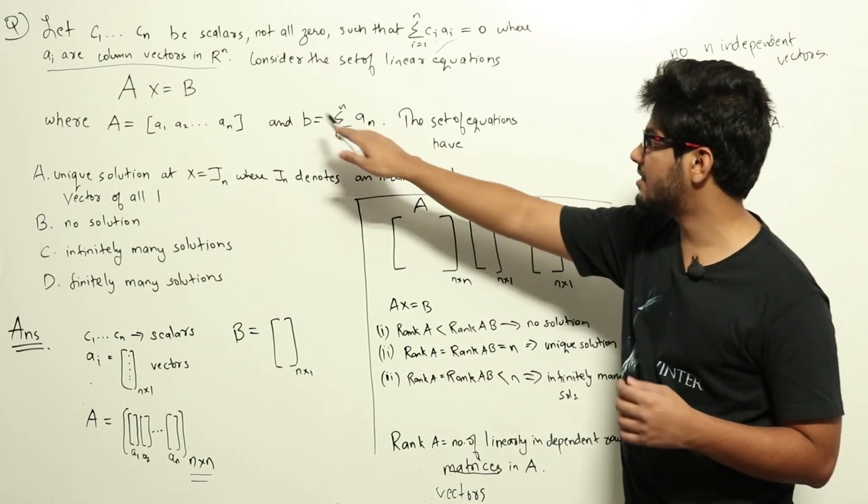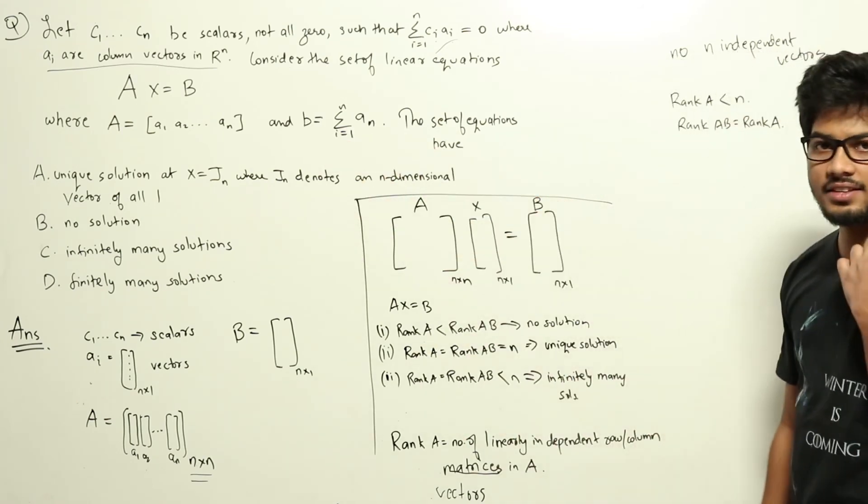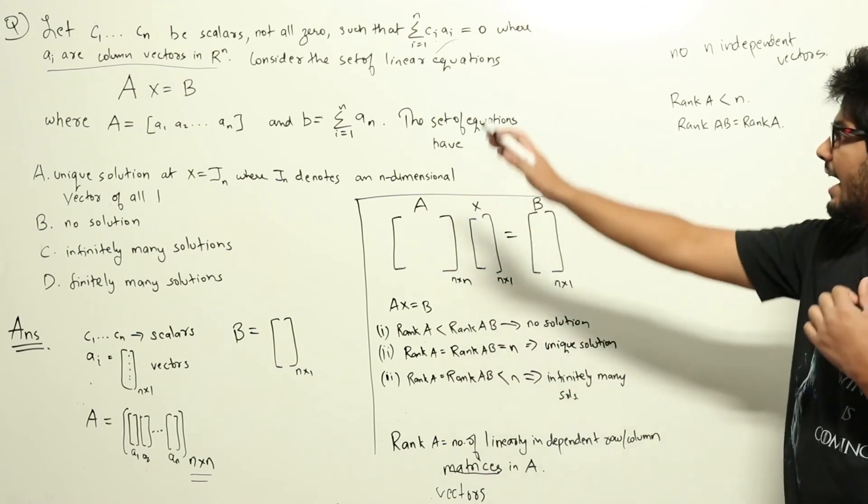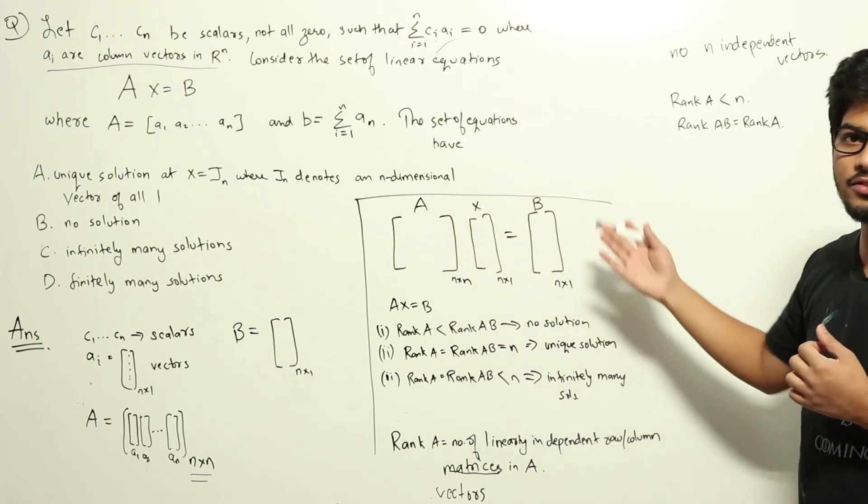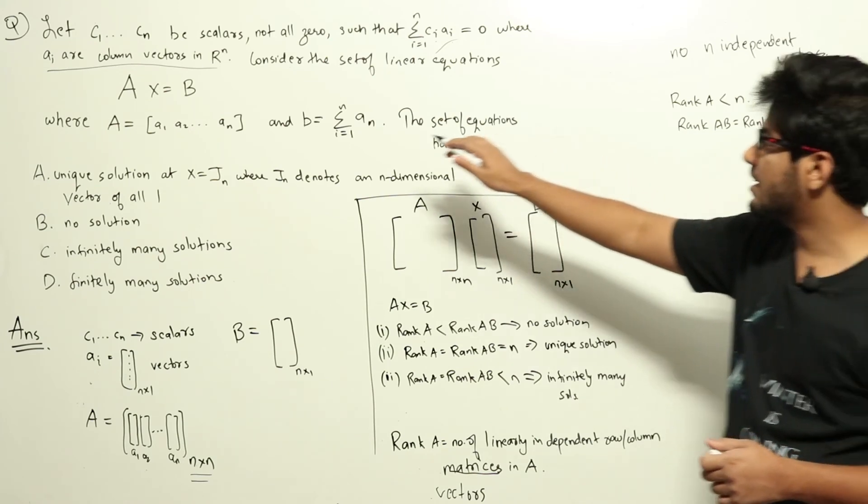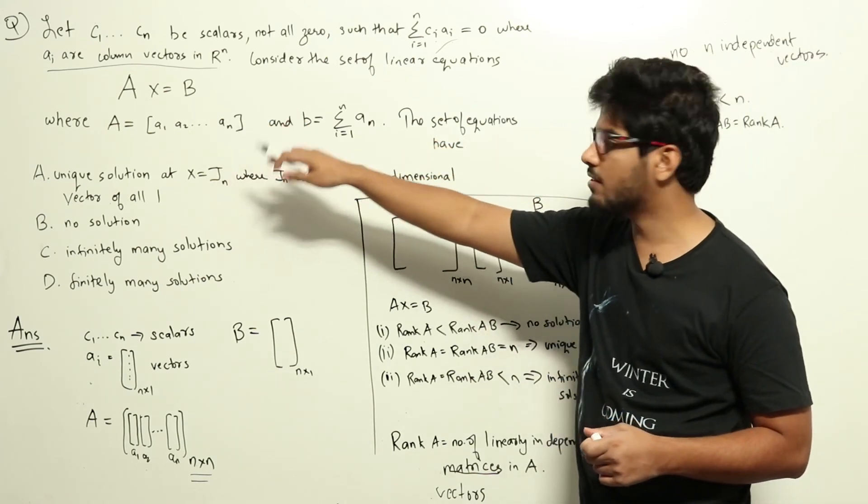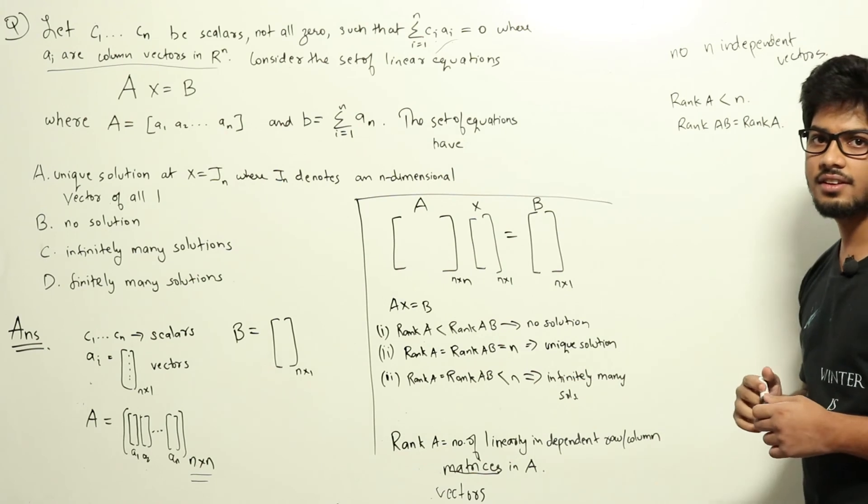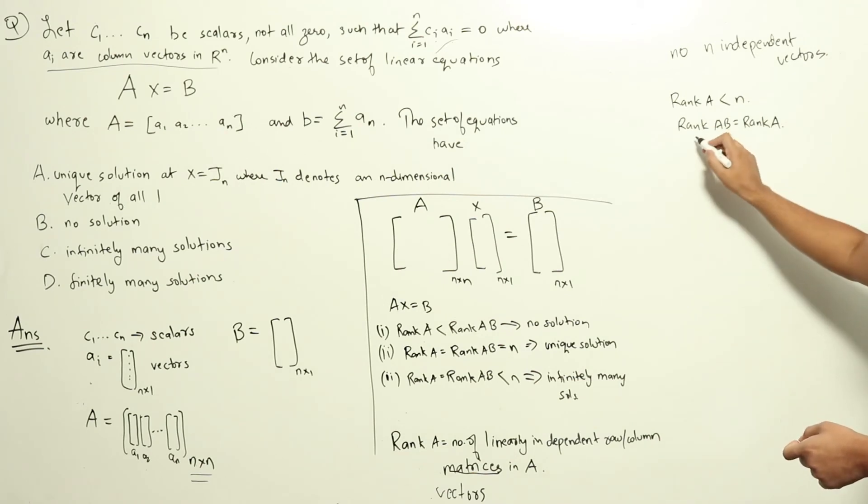So this is also linearly dependent to a1, a2, a3, up to an. Adding the new vector b doesn't give us a new linearly independent vector here. So the number of linearly independent vectors in A will be equal to the number in Ab, which means that rank of Ab is also equal to rank of A.